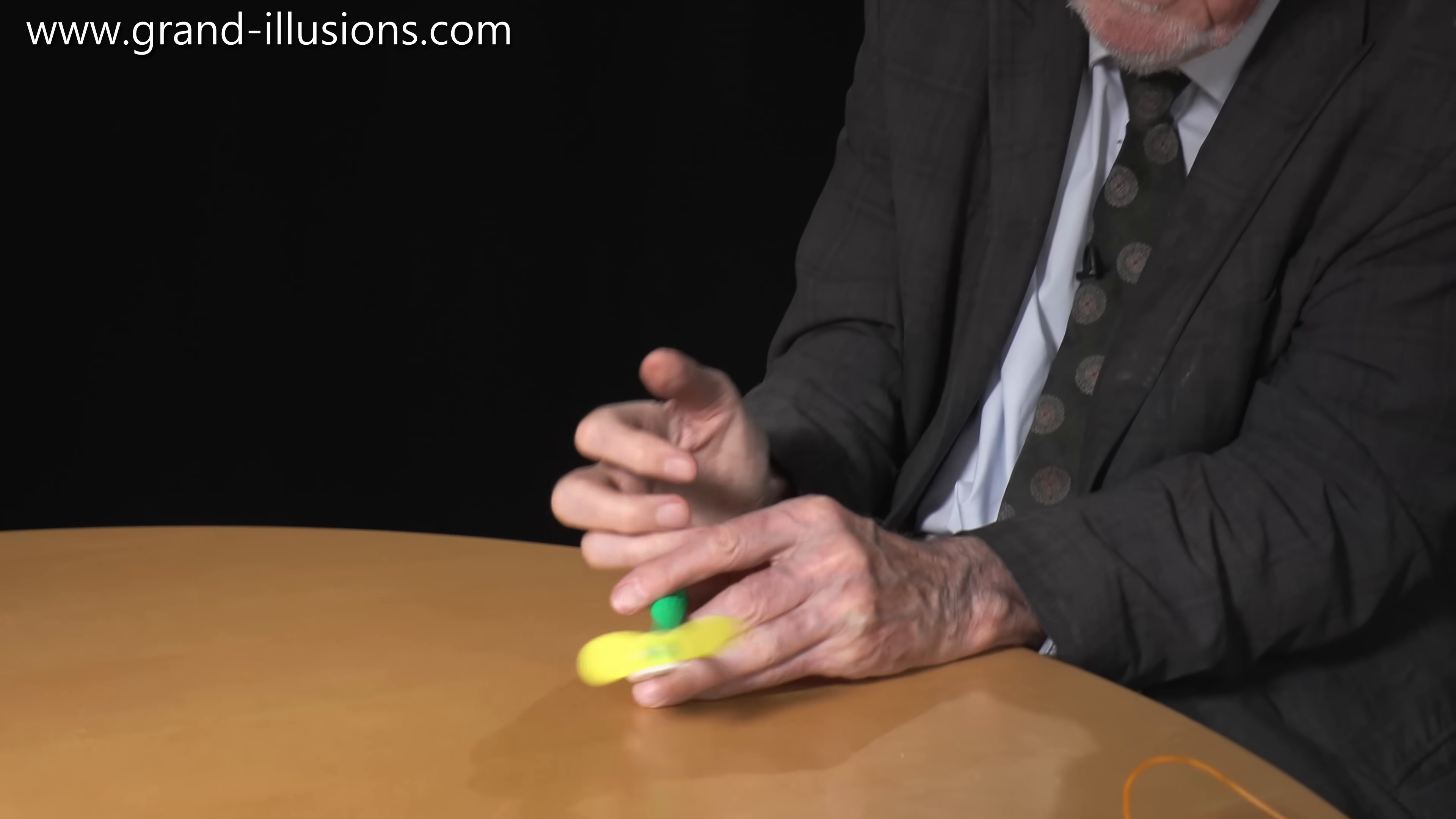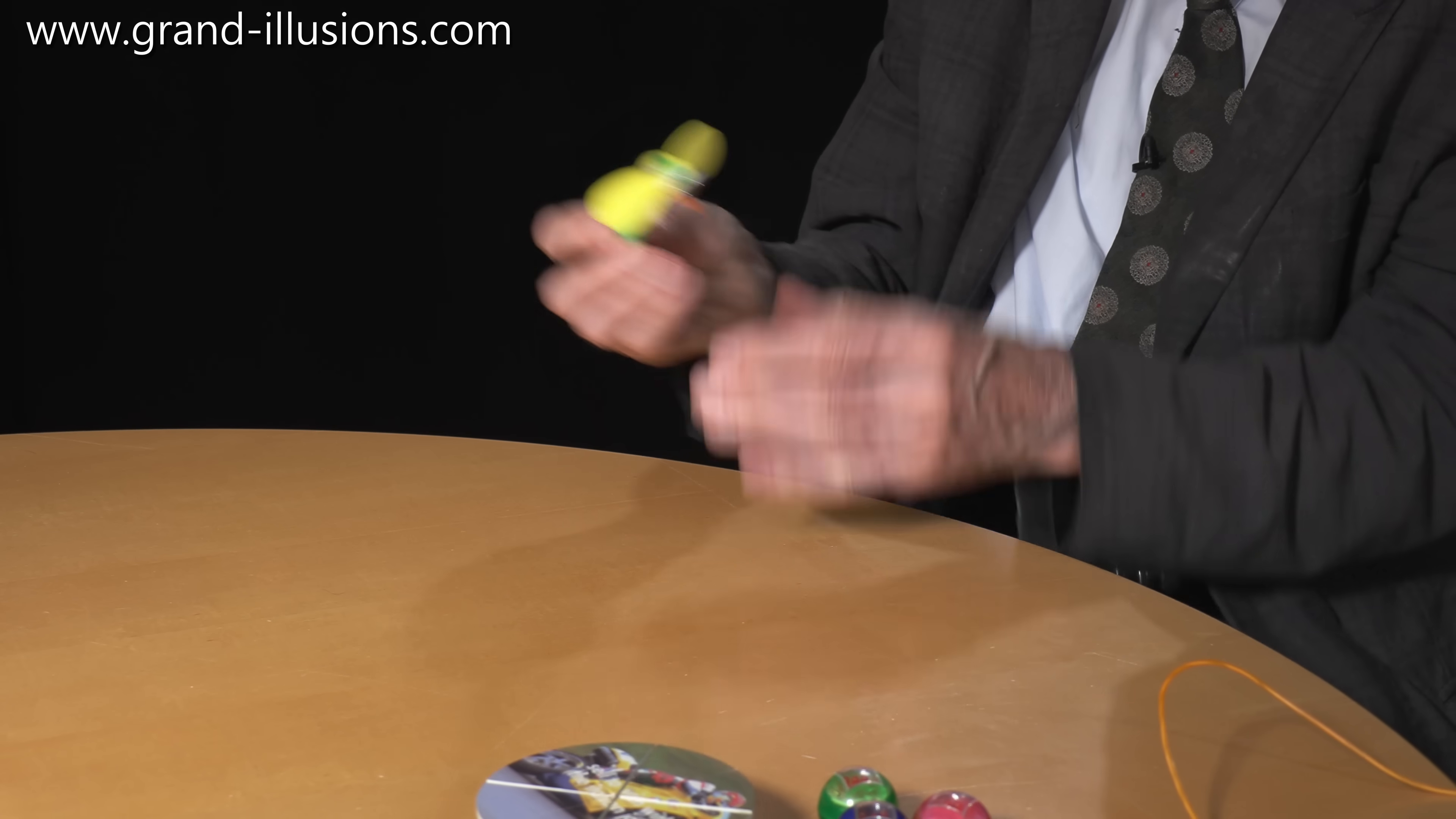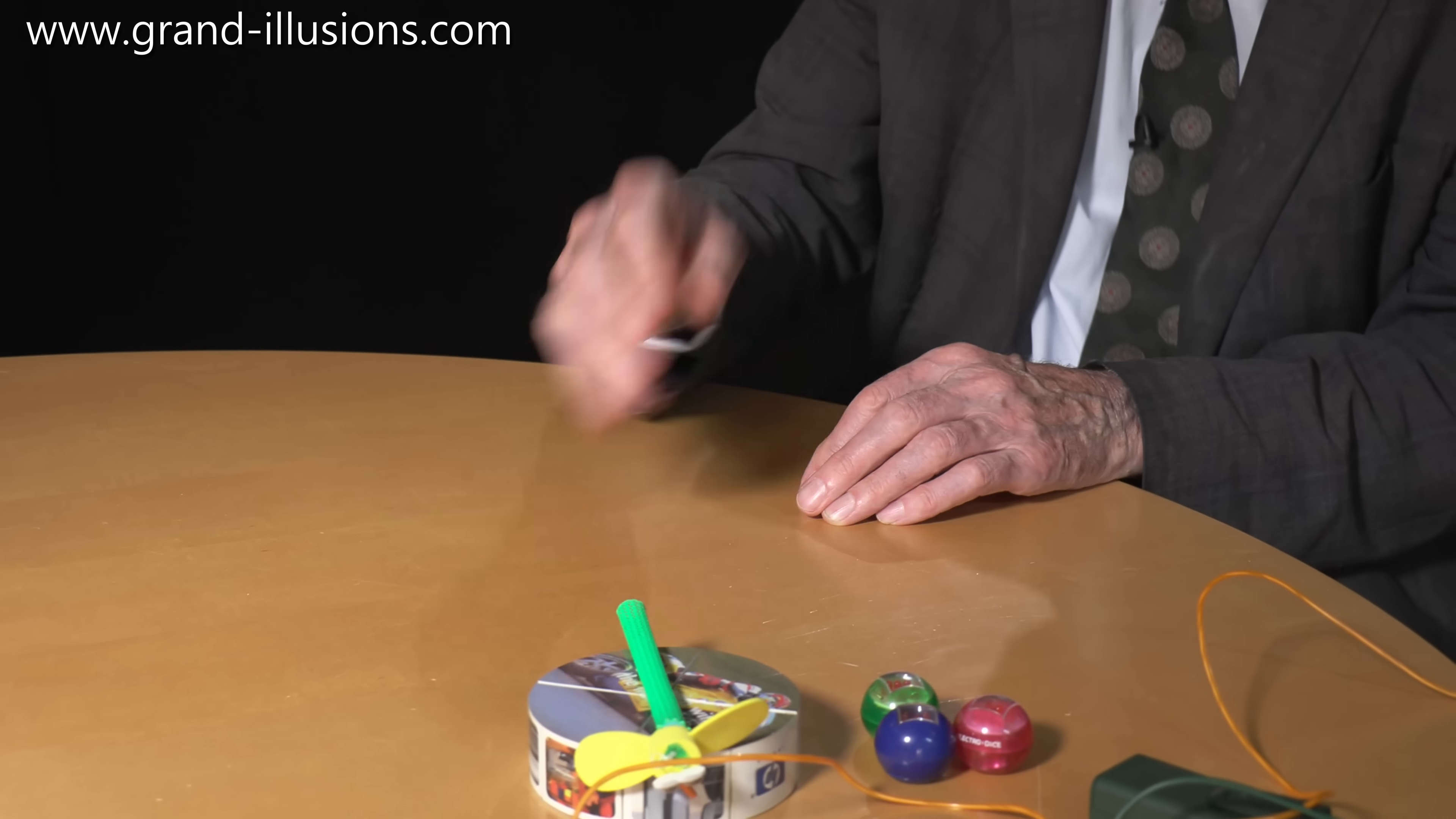To get it off again is quite tricky. You've got to pull like that and it just about comes off. A very sweet little thing for children to play with, something that attracts them, and it attracts them by holding on to their fingertips, which is very nice.